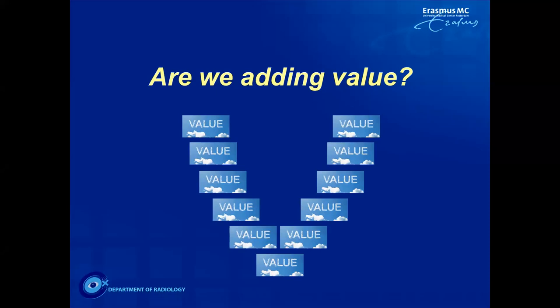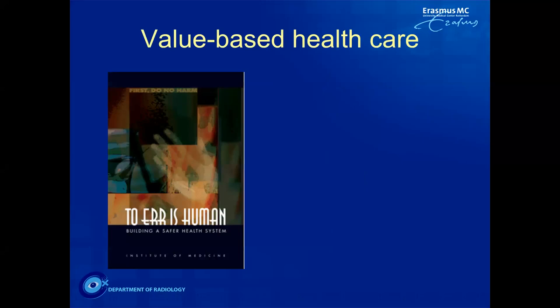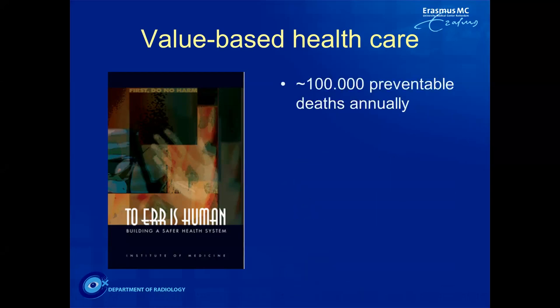With all those kinds of statements, we really need to prove that we add value to the patient and that we are adding value to the healthcare chain. Talking about value-based imaging necessarily implies that we also talk about value-based healthcare. In 1999 a report was published — 'To Err is Human' — which basically stated that in healthcare in the United States approximately 100,000 preventable deaths occur every year due to medical errors.